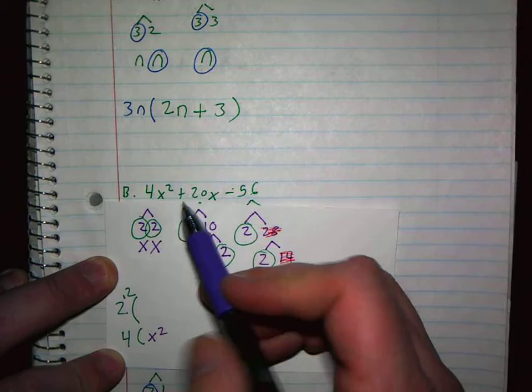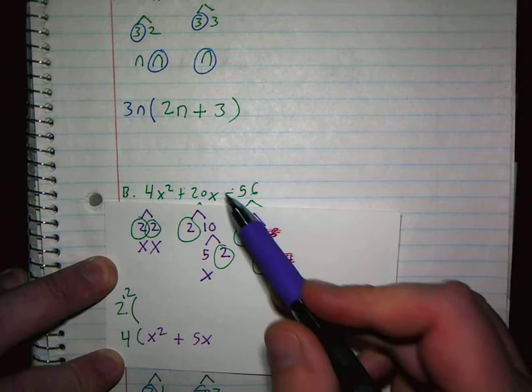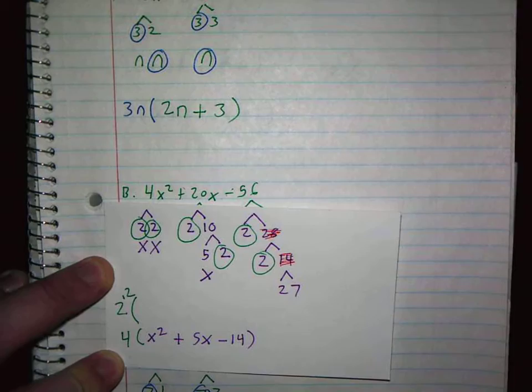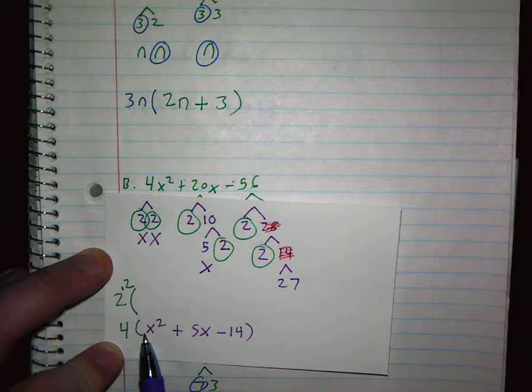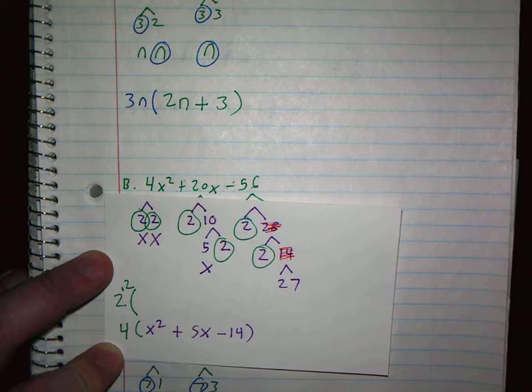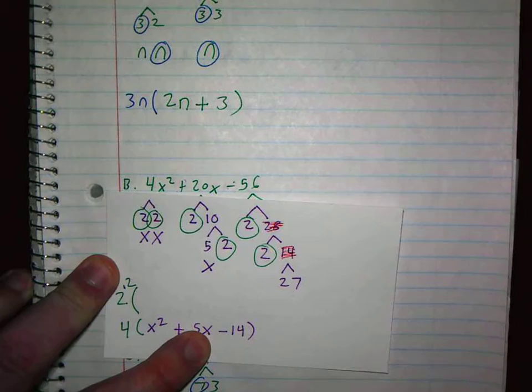So it should be 4, right? Because I brought out 2 2s. Right? 2 times 2 is 4. And what's left over here is X squared. Because I have 2 Xs. And then, yeah, plus 5X. And minus 2 times 7, 14, right? Now, from there, notice we have a trinomial. And A is 1, right? The leading coefficient is 1.